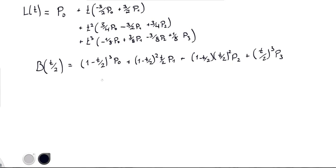So all we've got to do is expand these things. I've already done that. It's not so bad. So this first term is going to be exactly 1 minus 3 halves T plus 3 fourths T squared minus 1 eighth T cubed P0.